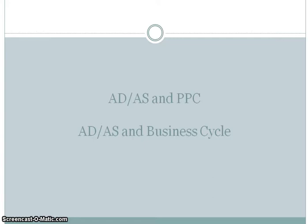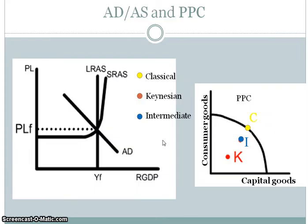In this screencast, we are going to connect the aggregate demand and aggregate supply model to things that we've learned in the past. We're going to look at the production possibility curve from Unit 1, and we're going to connect it with the business cycle that we've learned in Unit 2.